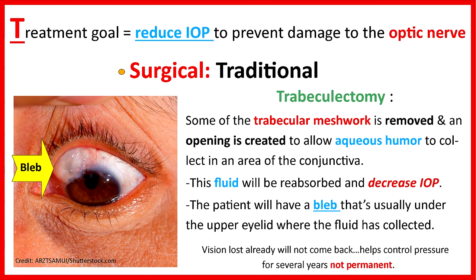A more traditional type of eye surgery is typically performed when intraocular pressure cannot be decreased because eye drops or other procedures are not working. A common type is called a trabeculectomy, where some of the trabecular meshwork is removed and an opening is created to allow aqueous humor to collect in an area of the conjunctiva. This fluid will be reabsorbed and decrease IOP. The patient will have what's called a bleb — visible under the upper eyelid where the fluid collects. Note that vision already lost will not come back, and these procedures help control pressure for several years but are not permanent.